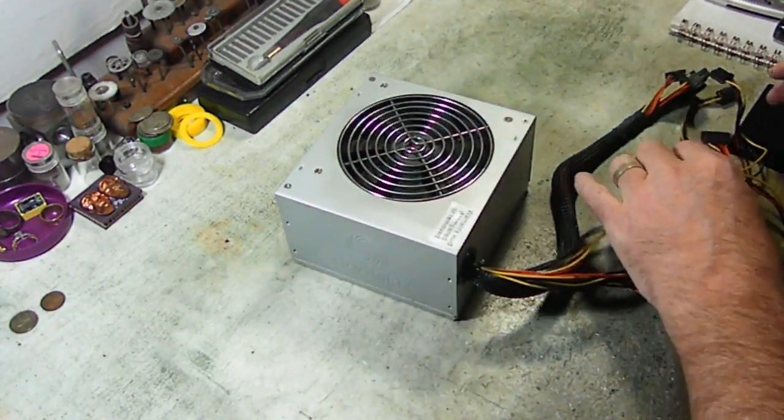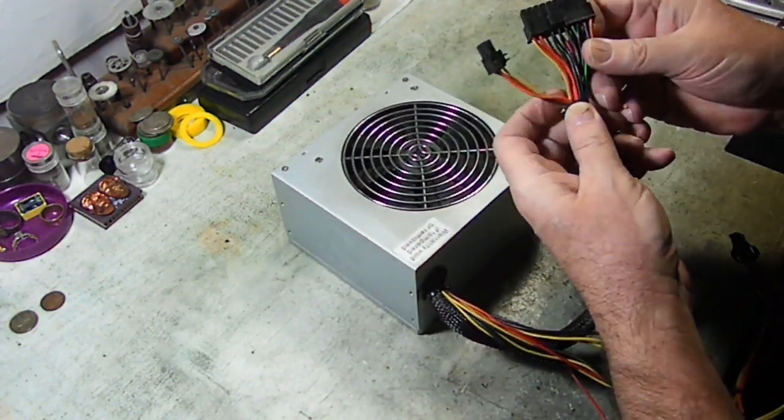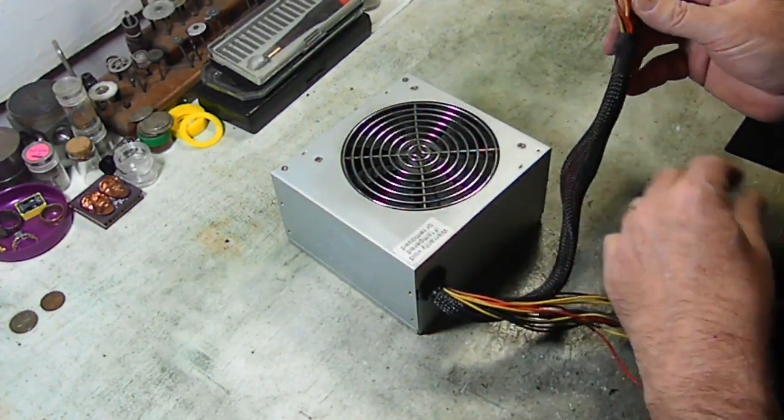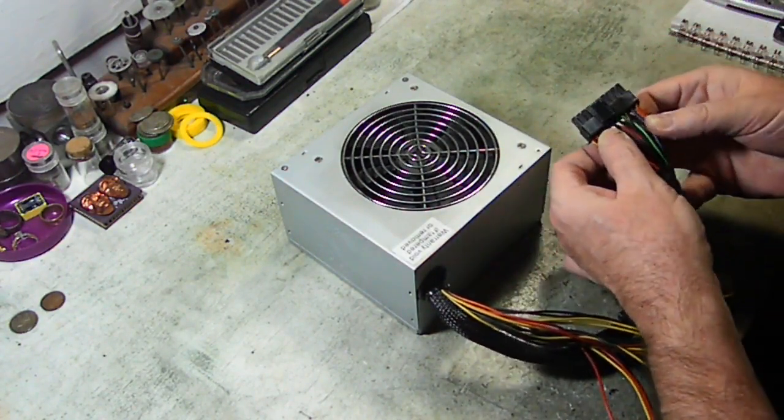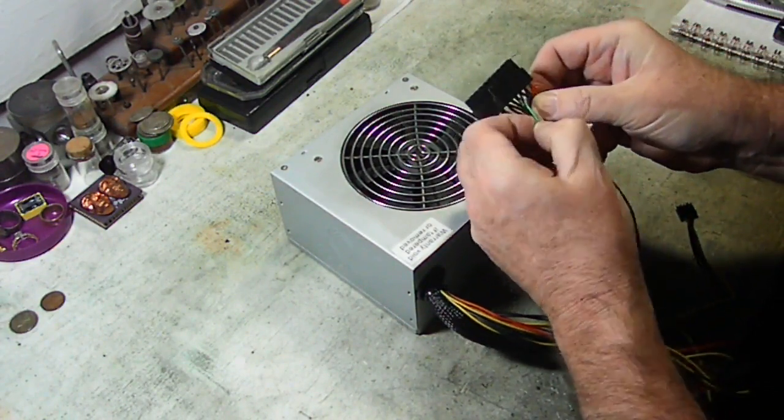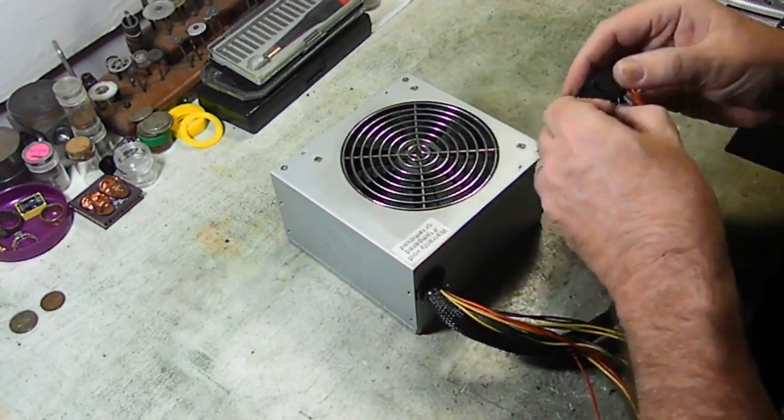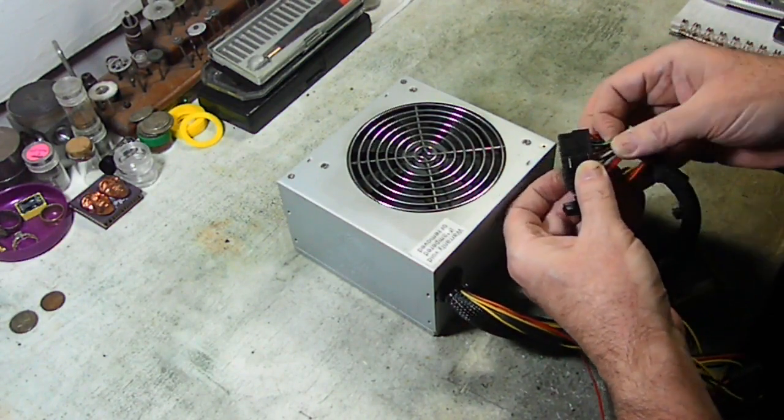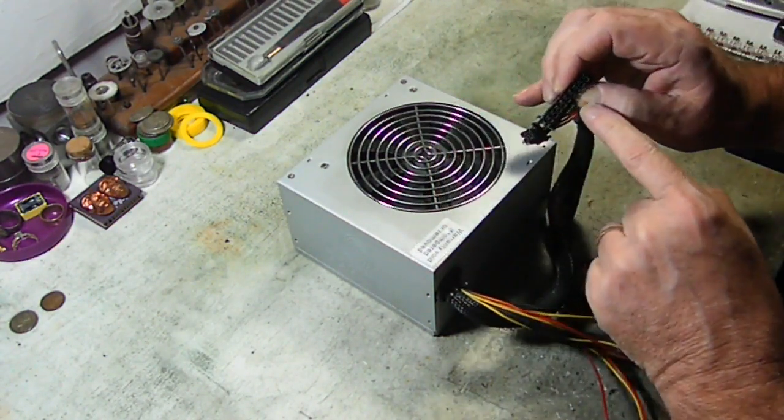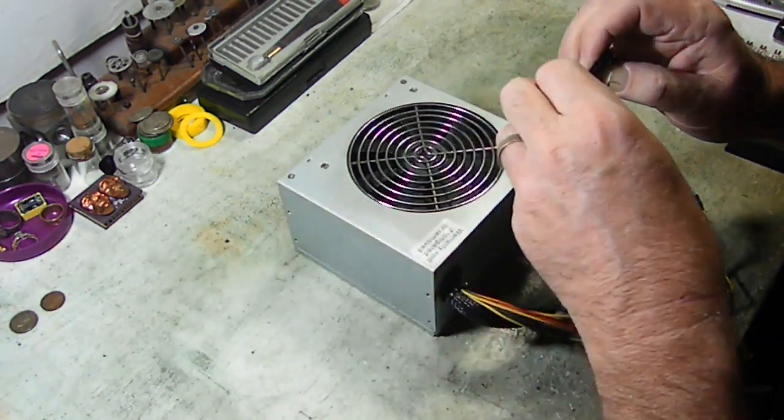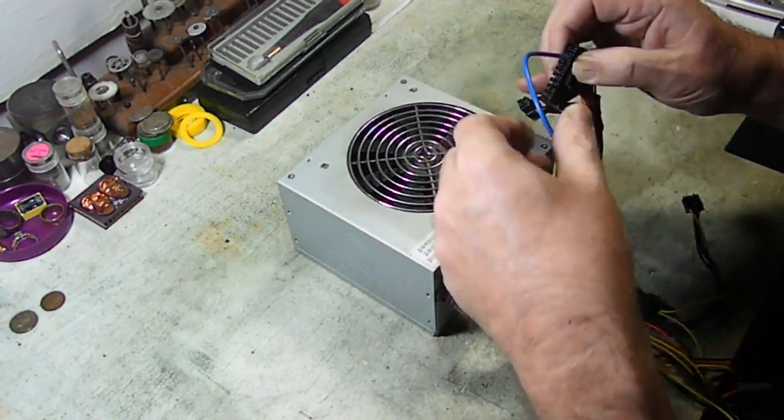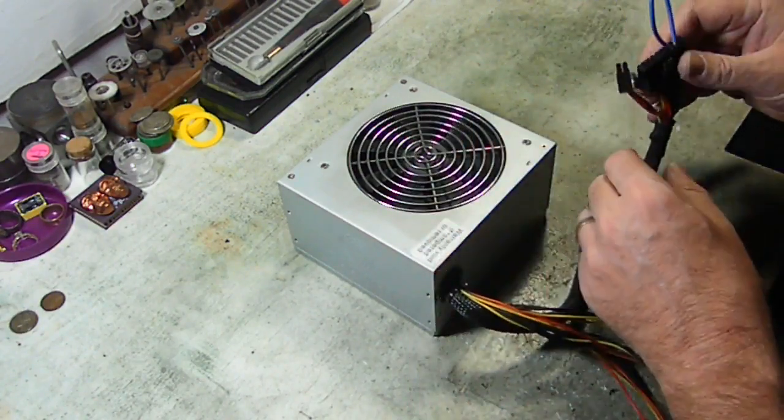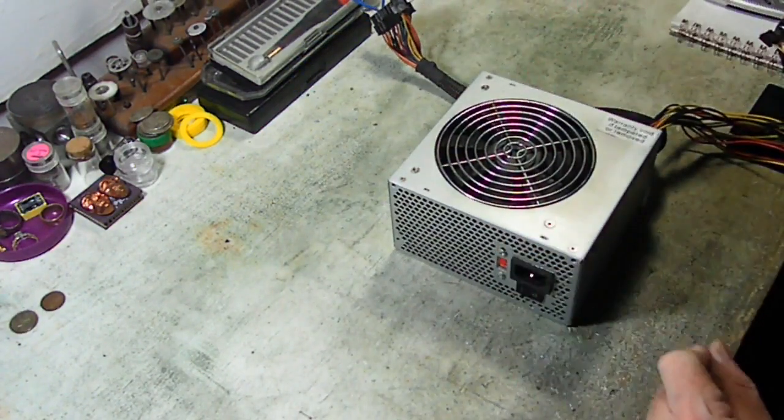The very first thing that we have to do is tell it that it's connected to something. All your black wires, every black wire in this, are all ground wire. Now what we're going to do is find a green wire, right here, and a black wire, which there is one right next to it. These two right here, and we are going to jump those together. We're just simply going to stick a wire in there.